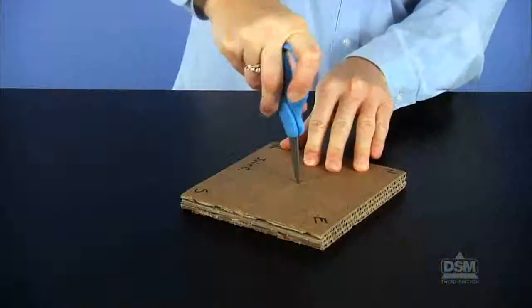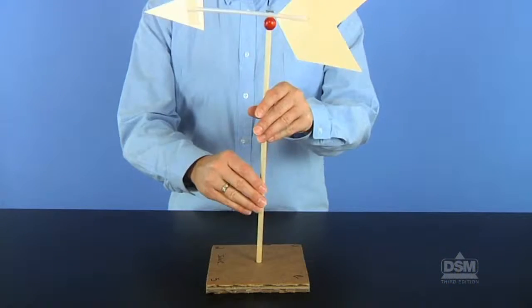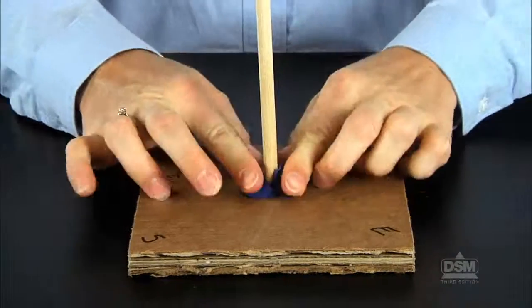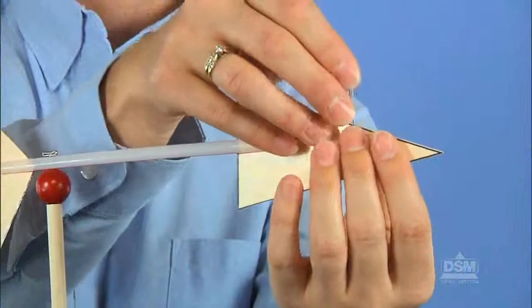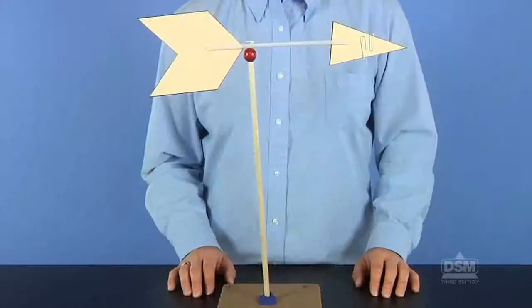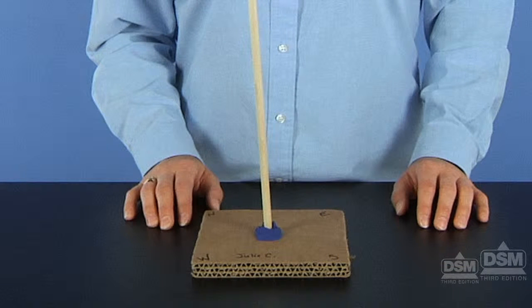Check that the vane rotates freely, then use the scissors to poke a shallow hole in the center of the cardboard. Make sure not to poke all the way through. Attach the wind vane by inserting the dowel into the hole and press the clay tightly against the cardboard around the bottom of the dowel. If necessary, attach one or more paper clips to the head of the vane so that the head and tail balance. The corrugated cardboard square will serve as a stand for the vane.